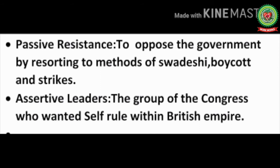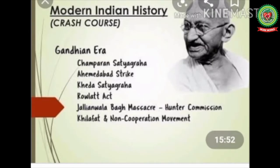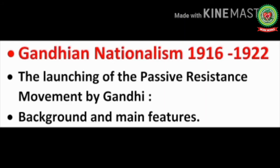The Gandhian era is composed of the Champaran Satyagraha, Ahmedabad strike, Kheda Satyagraha, Rowlatt Act, the Jallianwala Bagh Massacre, the Khilafat movement, and the Non-Cooperation movement. In this module we are going to discuss Gandhian nationalism from 1916 to 1922 — the launching of the passive resistance movement by Mahatma Gandhi, and the background, main features, and main policies of Mahatma Gandhi.